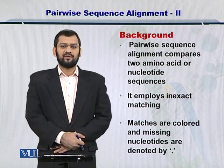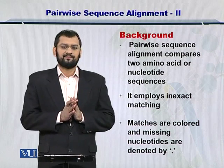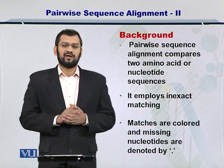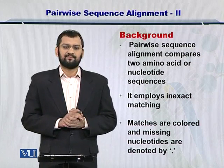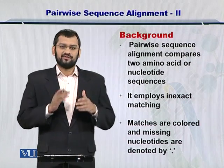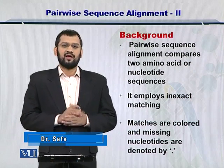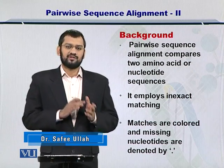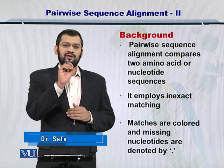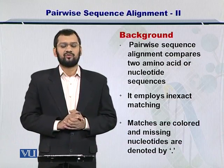Pairwise sequence alignment essentially means that you are trying to compare two sequences, and the process that it involves is the inexact matching process. In the inexact matching process, we consider some differences between the sequences. And if there is an insertion or a deletion within the two sequences, then we can create a dot in the alignment, which is called a gap.